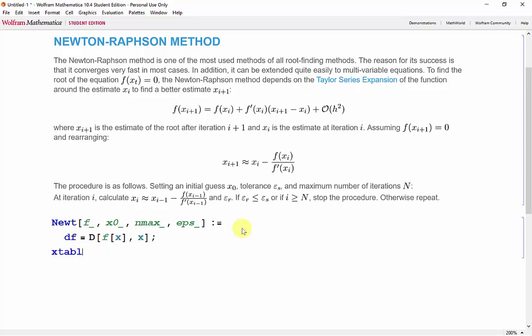And we'll set up our x table with an initial guess of x0, placeholder for the error, and initialize our increment i.